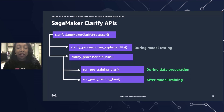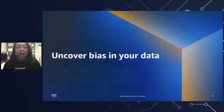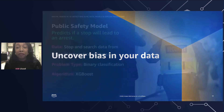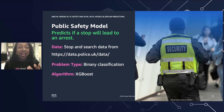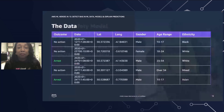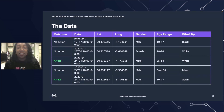Let's first look at the pre-training bias that will allow us to uncover bias in our data. Here's a quick overview of the model that I trained. It's a public safety model that basically predicts if a stop is going to lead to an arrest. I pulled stop and search data from the UK. The problem type is a binary classification — it simply answers a yes or no question: will the stop lead to an arrest? I used the XGBoost SageMaker version to train the model. The data includes the outcome, date, latitude and longitude, gender, age range, and ethnicity. Features like ethnicity, age range, and gender are ones where we really care about bias, and we want to make sure we mitigate any bias across those features.